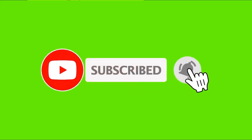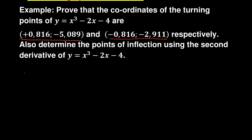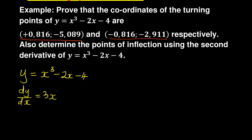Whenever you're proving the coordinates you have to use calculus. We are given y is equal to x cubed minus 2x minus 4. Whenever I have to find the coordinates of the turning point, the first thing I have to do is find dy/dx — the first derivative. Applying the rules of calculus: 3x to the power 3 minus 1, then minus 2 times x becomes 1, and the constant 4 becomes 0. So this gives dy/dx = 3x² minus 2.